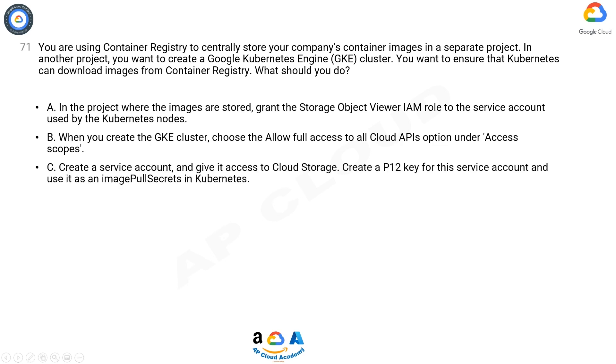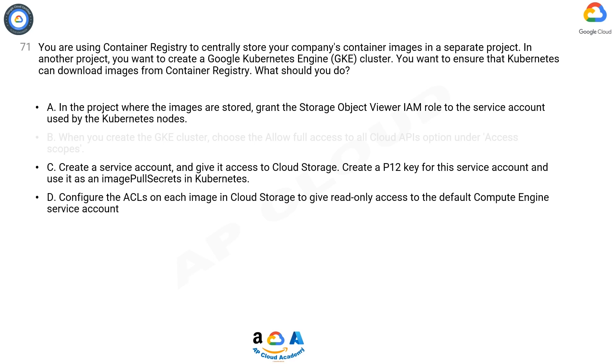Option C. Create a service account and give it access to Cloud Storage. Create a P12 key for this service account and use it as an image pull secret in Kubernetes.